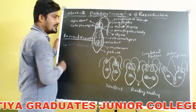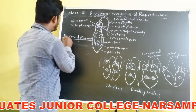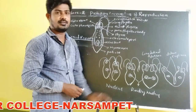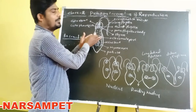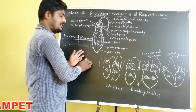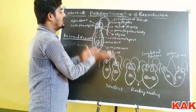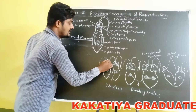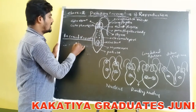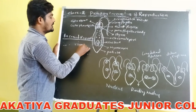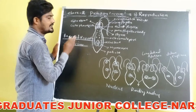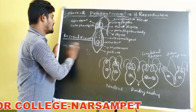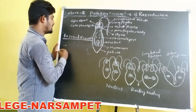In asexual reproduction, the newly formed individuals resemble the parents structurally and genetically. These daughter individuals are called clones, which are structurally and genetically identical to the parents.